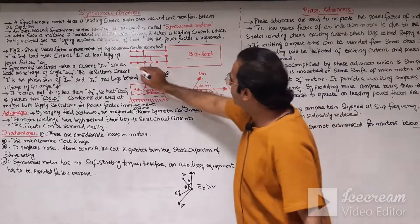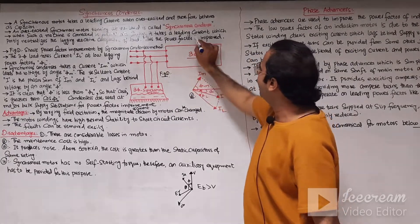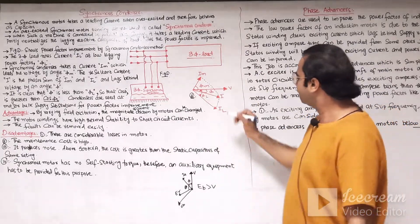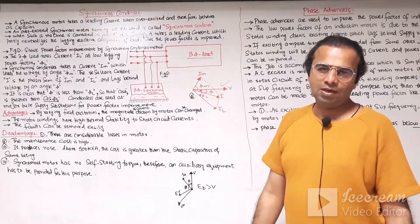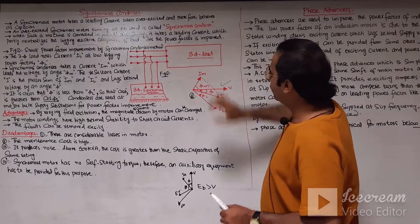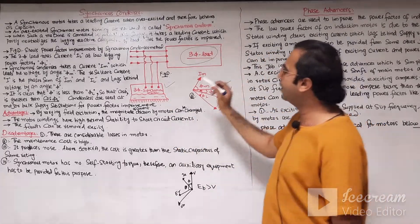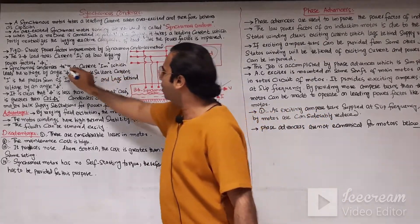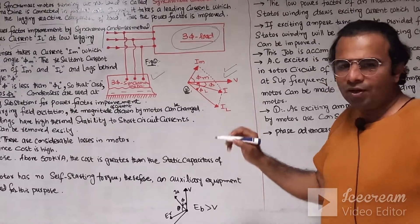When such a machine is connected in parallel with the three-phase supply, it takes leading current and partly neutralizes the lagging reactive component of the load, improving the power factor of the three-phase load. This is the phasor diagram of the three-phase synchronous condenser — a three-phase synchronous motor running at no load behaving like a synchronous capacitor. Figure one shows the synchronous motor connected along with the three-phase supply to improve the power factor of the three-phase load.